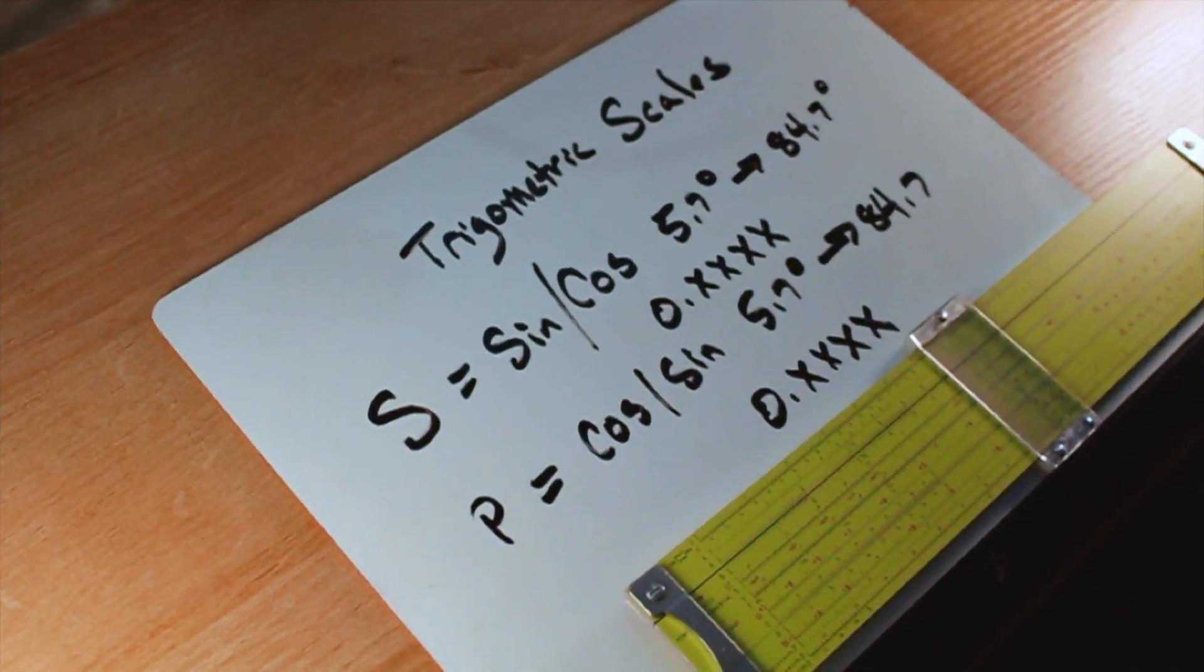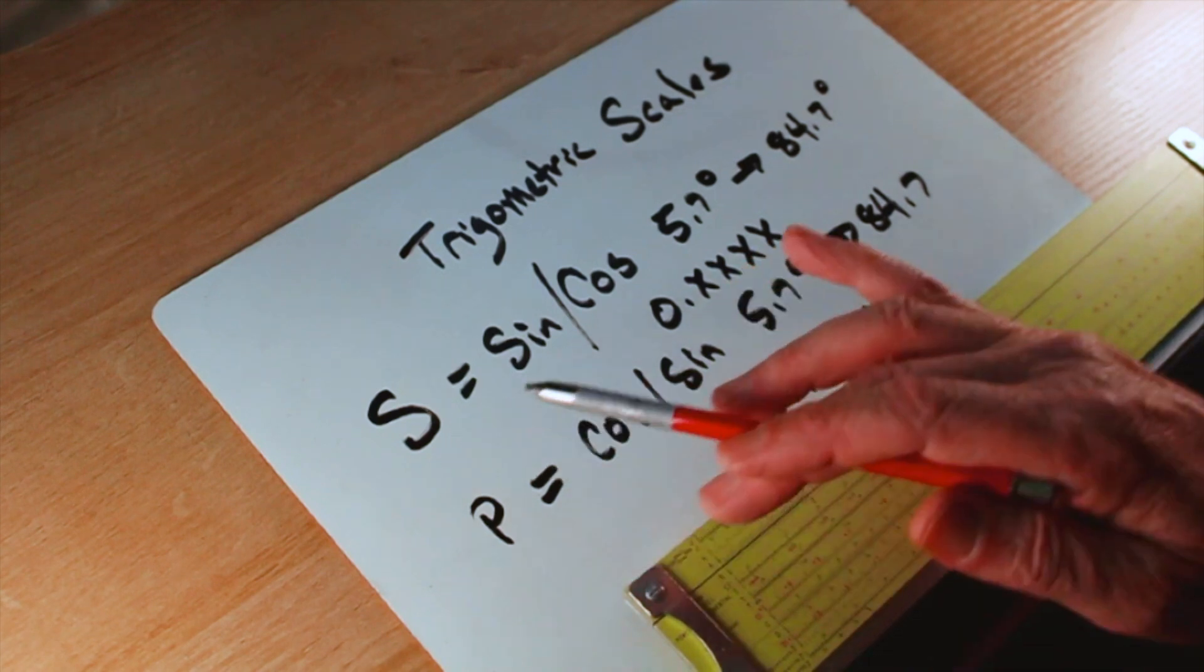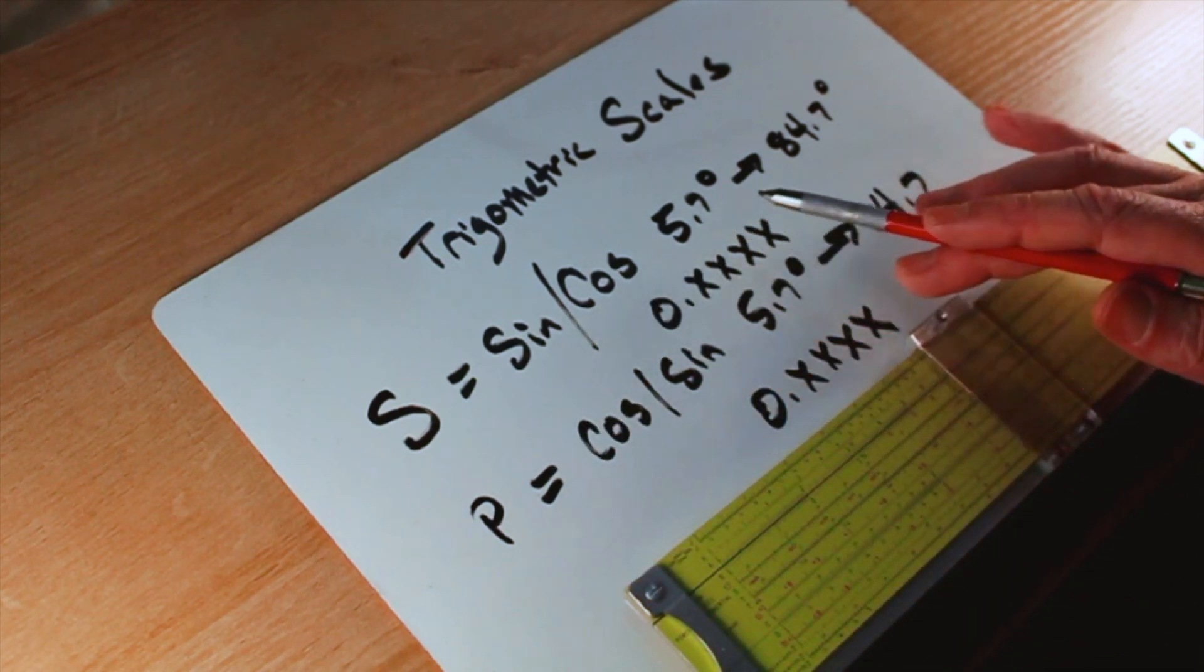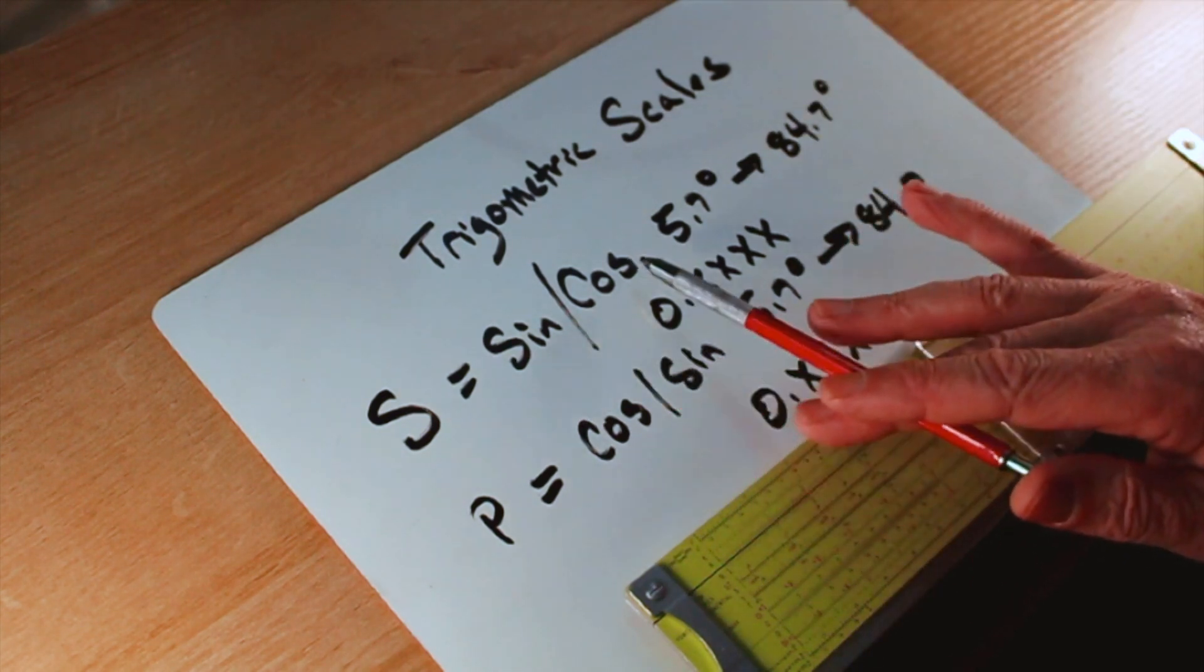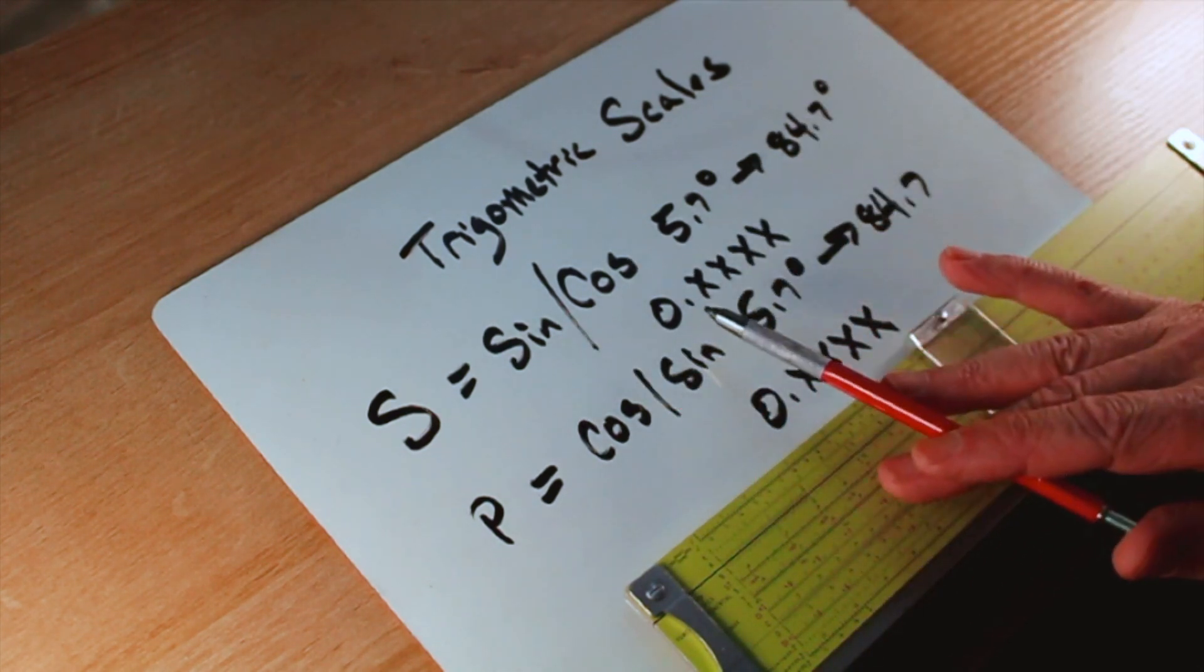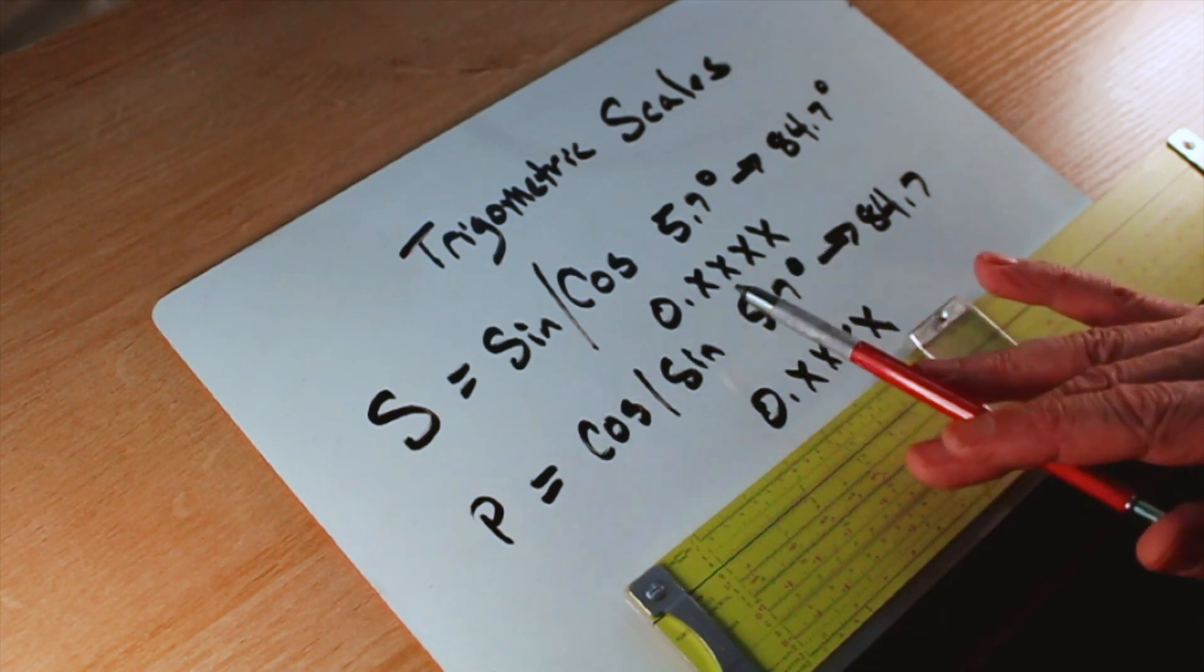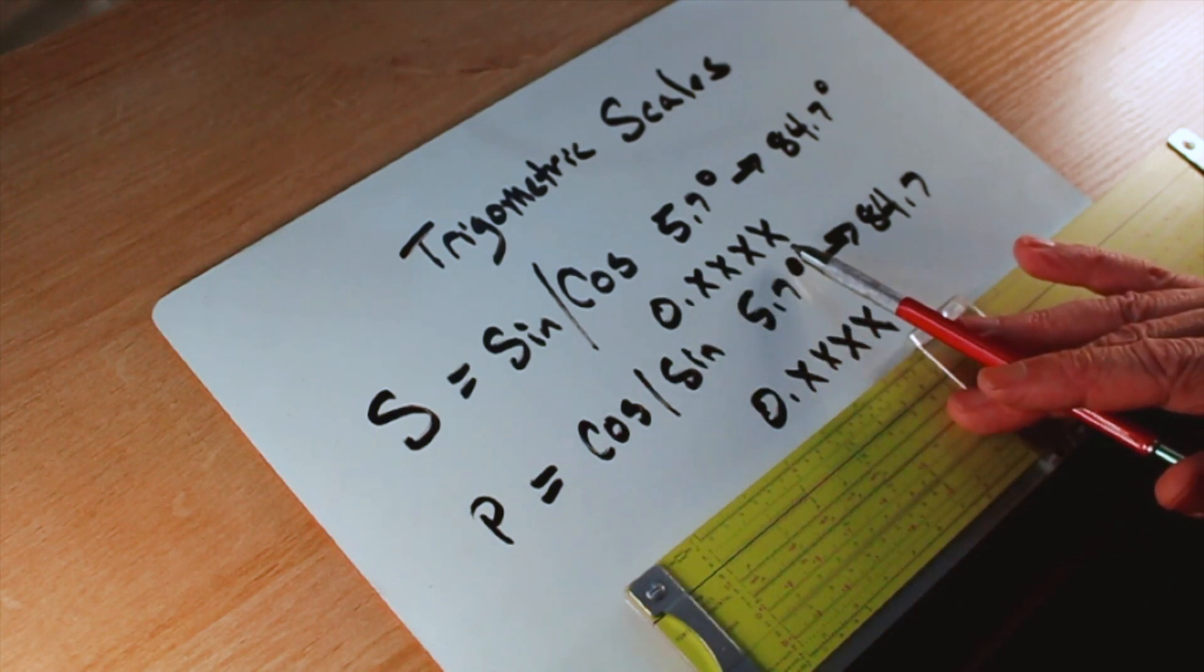Now to begin our discussion of the trigonometric scales on the slide rule, let's go over the two main ones. The first one is going to be the S-scale. And that's sine and cosine for an angle between 5.7 and 84.5 degrees. If you look at the sine and the cosine for these angles, they'll take the form of 0.something something something something.